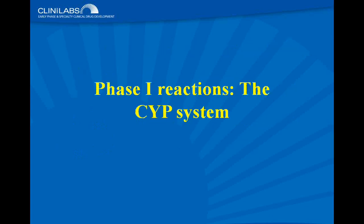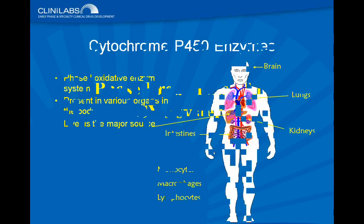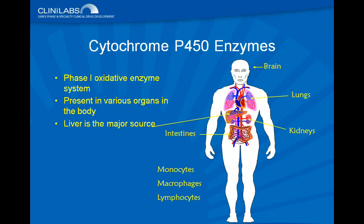Now let's talk specifically about drug metabolizing enzymes. Starting with phase one reactions: the cytochrome P450 system. The liver is the major source of cytochrome P450 enzymes, but in fact they are found in most organs of the body. They are called the phase one oxidative enzymes. While the liver is the most highly metabolic organ, cytochrome P450 enzymes found throughout the body can affect drug metabolism and drug response — not just by the liver converting drugs, but by other organs as well.